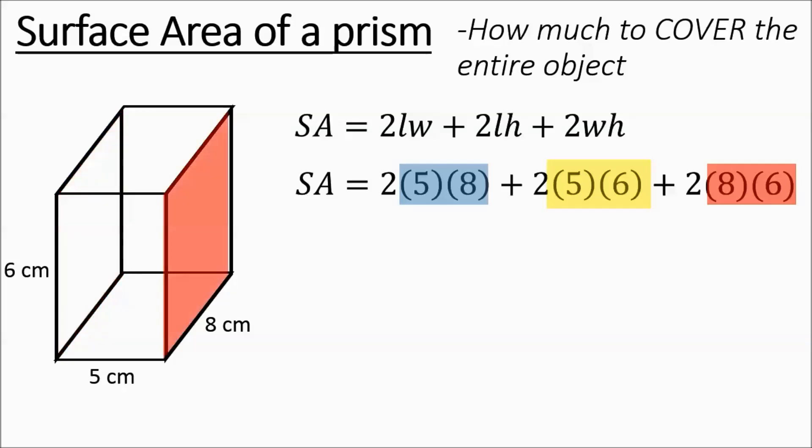And then what we do is multiply them out. 2 times 5 times 8, you write down the answer. 2 times 5 times 6, that gives you the 60. 2 times 8 times 6 gives you the 96. Then you add them up.